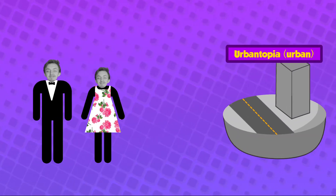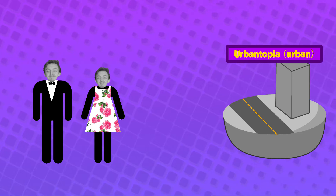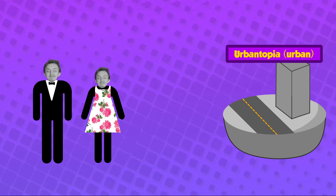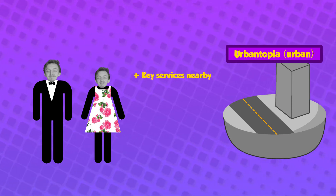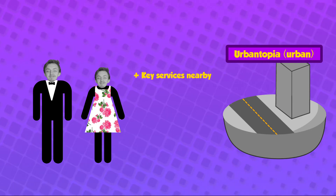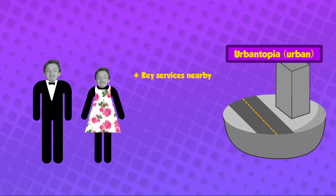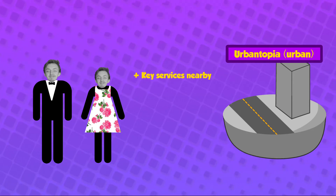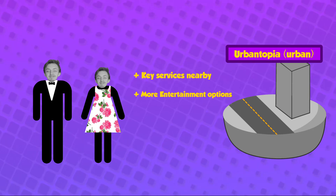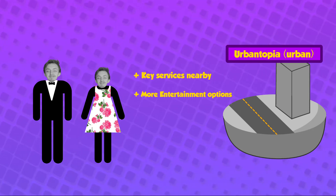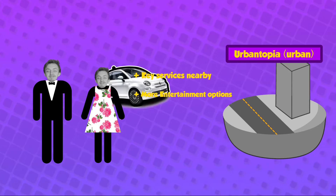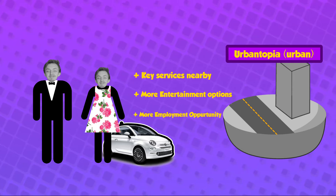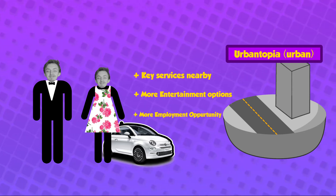Now let's see why the Bobbinsons wanted to move into Urban-topia. These reasons are our pull factors — factors that pull you into living in a new place. Unlike Ruralot, there are a lot of key services in Urban-topia such as nearby hospitals, which is good because Mr. Bobbinson is really clumsy. Plus, in urban areas there's more going on and more entertainment opportunity. You don't see many nightclubs setting up in villages like Ruralot. And lastly, there's more employment opportunity within urban areas — more jobs and higher paying jobs.